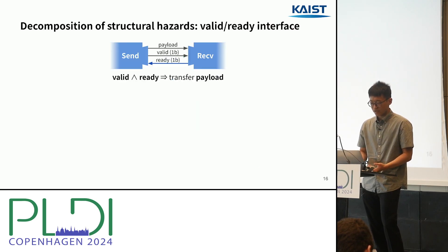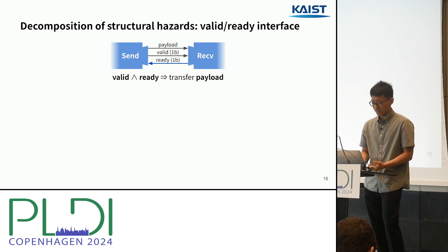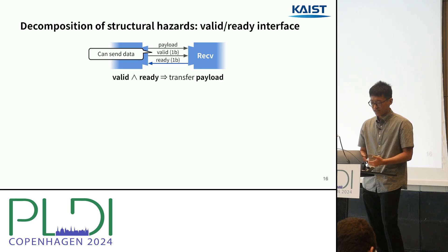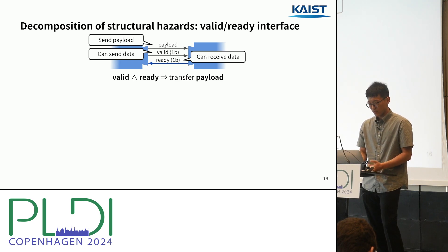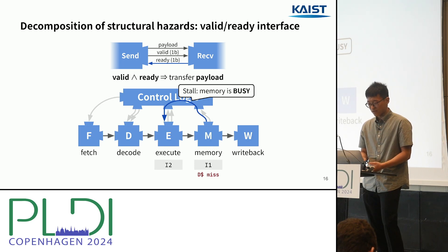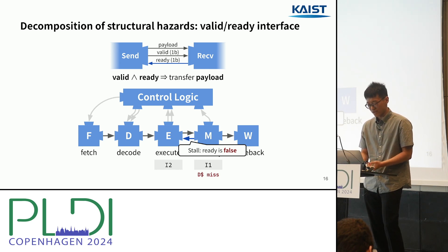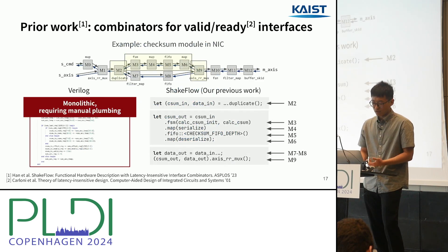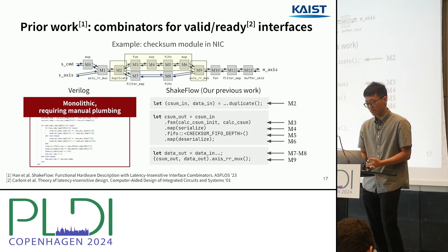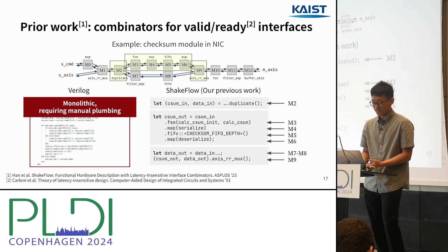This information can be decomposed using the valid-ready interface, which is a communication protocol in hardware. When there's a sender and a receiver, the sender indicates whether it has data to send through a valid bit, and the receiver indicates whether it is ready to receive data through a ready bit. When both are true, the sender sends payload to the receiver. So instead of relying on control logic, we can connect the execute stage and the memory stage using the valid-ready interface. By setting the ready bit to false, we can express that the memory is occupied without the need for global control logic. ShakePro proposed the combinator for valid-ready interfaces, so circuits with only structural hazard can be represented with a generalized combinator. However, the valid-ready interface cannot be used for data and control hazard.